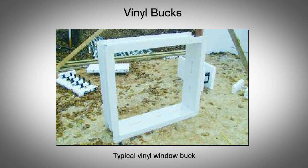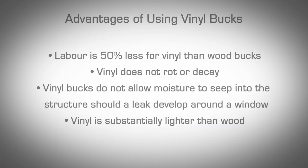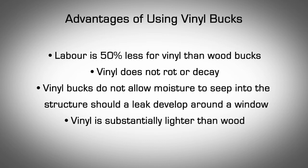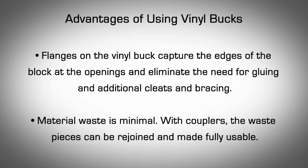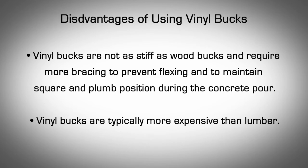Vinyl Bucks: Increasingly, builders are using bucks made from extruded vinyl. These bucks come in sections and are commonly cut on site with either a portable power saw or, more conveniently, a compound miter saw. Connectors are used at the corners to tie the cut sides together. The advantages include: labor is 50% less than wood bucks; vinyl does not rot or decay; vinyl bucks do not allow moisture to seep into the structure should a leak develop around a window; vinyl is substantially lighter than wood; and curves and rounds are much easier to construct and install. Vinyl bucks can be bent into the desired shape on site and can be ordered preformed. Flanges on the vinyl buck capture the edges of the block at the openings and eliminate the need for gluing and additional cleats and bracing, and material waste is minimal — with couplers, waste pieces can be rejoined and made fully usable. Disadvantages include that vinyl bucks are not as stiff as wood bucks and require more bracing to prevent flexing and to maintain square and plumb position during the concrete pour, and vinyl bucks are typically more expensive than lumber.